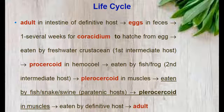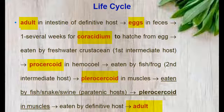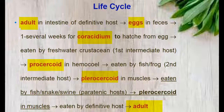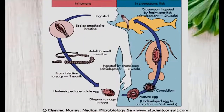So simply, the life cycle is: Adult → Eggs → Coracidium → Procercoid (in first intermediate host, Cyclops) → Plerocercoid (in second intermediate host, salmon fish) → Adult (in definitive host). This diagram shows the life cycle of Diphyllobothrium latum in humans and in the intermediate hosts.